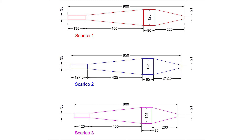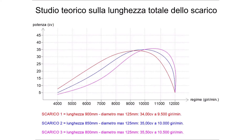In fact, the diffuser cone is 450 in the first exhaust, 425 in the second and 400 in the third. The final diameter and the initial diameter will stay constant instead, just like the belly. By observing this comparative graph, we can appreciate the differences between each muffler. If we take the medium length one, 850mm, as a reference, we can see that it manages to get the engine at a maximum power of 25hp at 10,000 rpm.